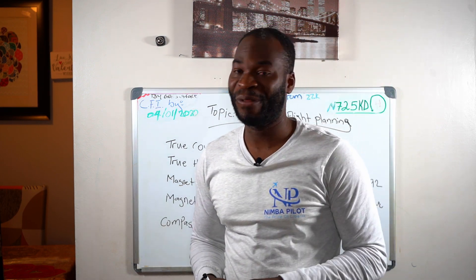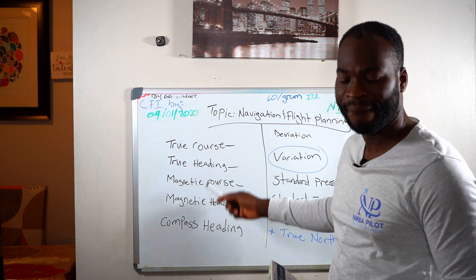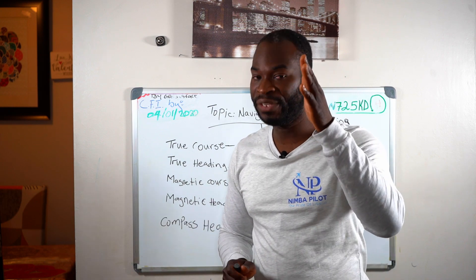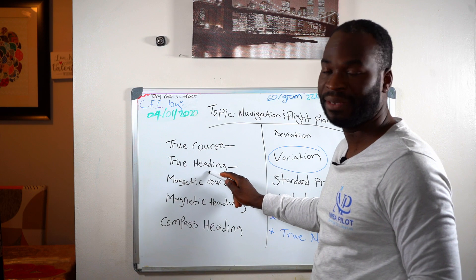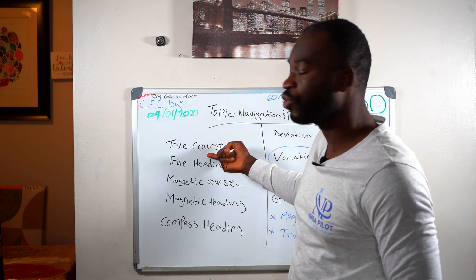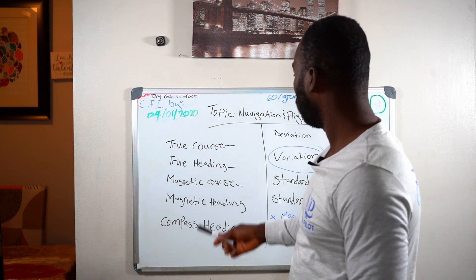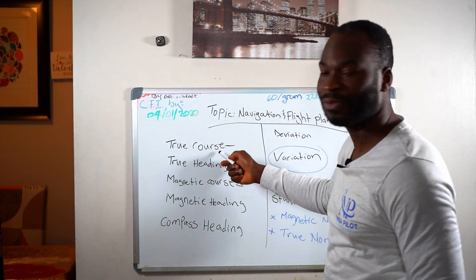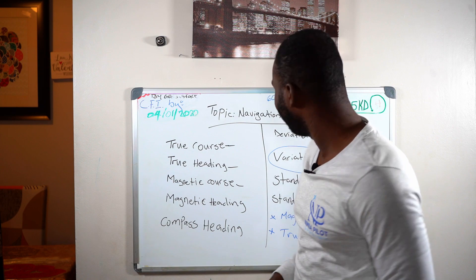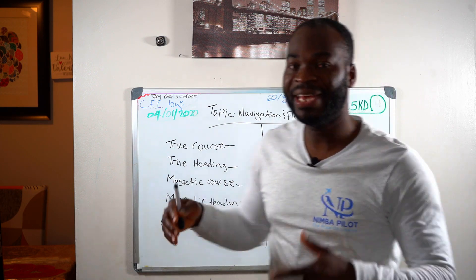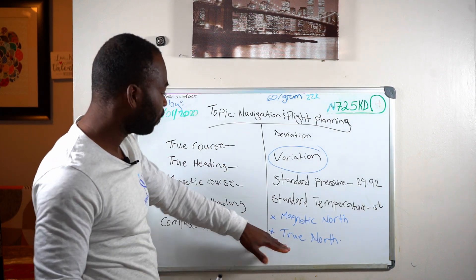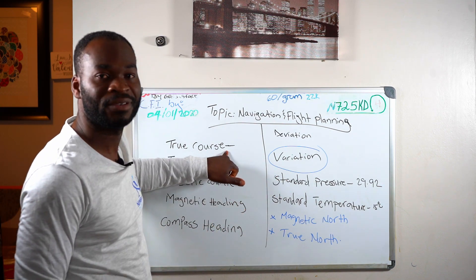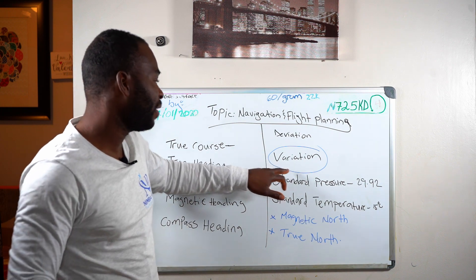Now, your true heading. We have true course and true heading. Your true heading is at that moment, wherever the nose of your aircraft is pointing — that is your true heading. Your true heading is not necessarily your true course. Your magnetic course: my magnetic course is my true course corrected for magnetic variation. That is why I wanted us to go over these terms first. Your magnetic course is your true course corrected for magnetic variation, and when we get to the flight planning portion, we are going to see exactly what we are talking about.